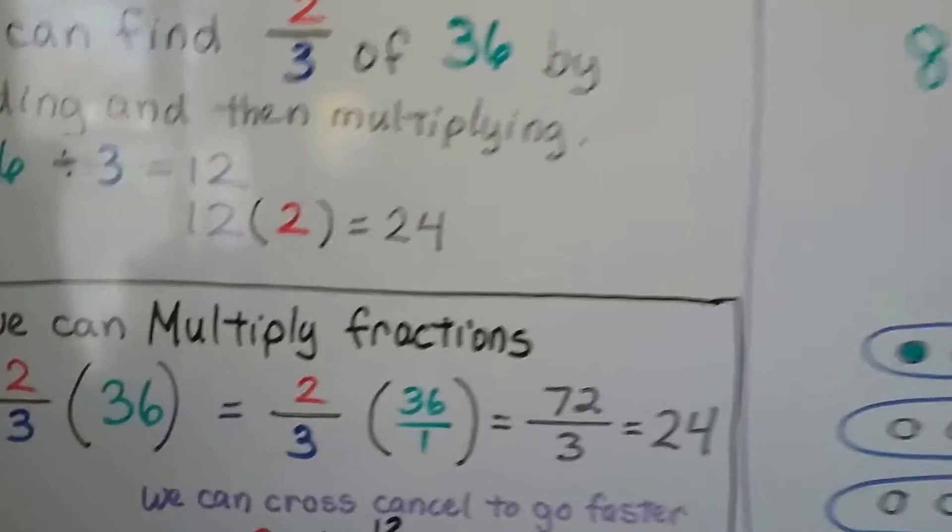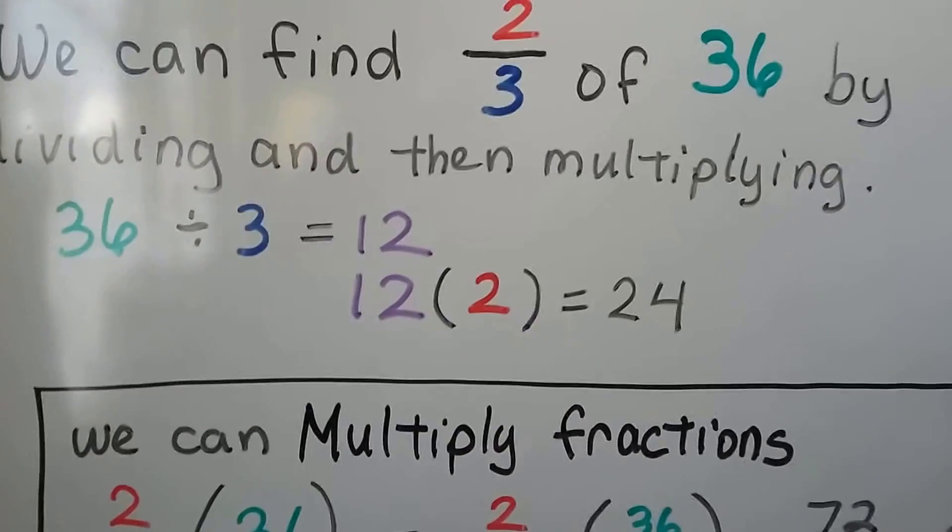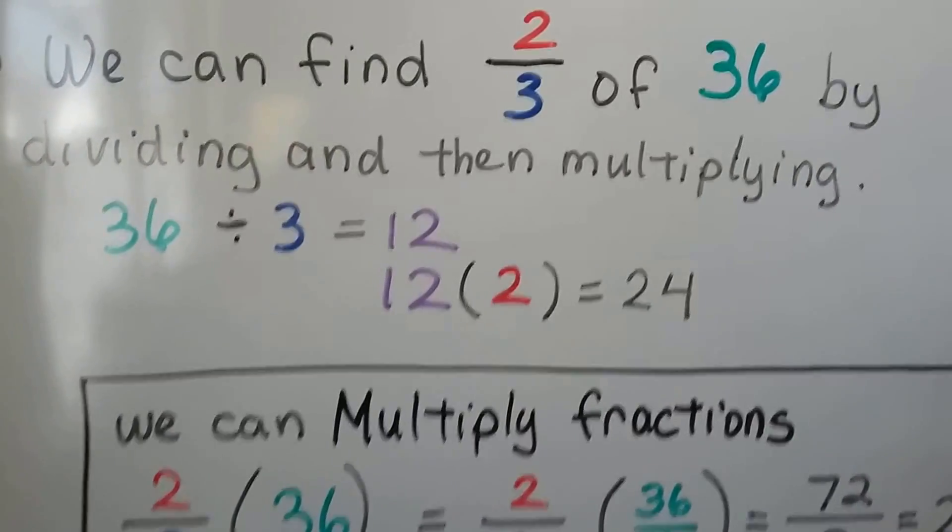With or without multiplying fractions, we can find two-thirds of 36. We can do it by dividing and then multiplying.